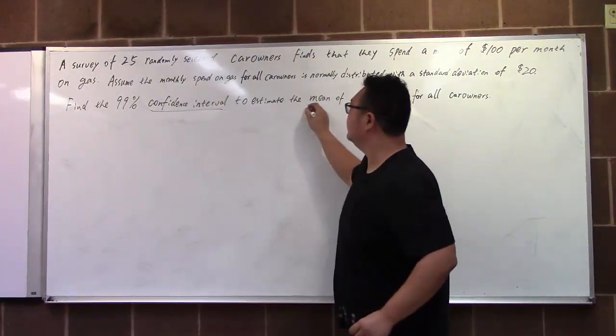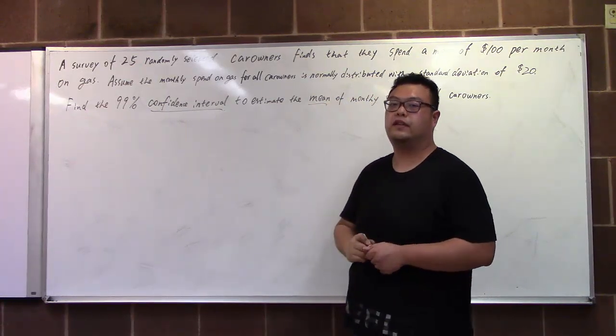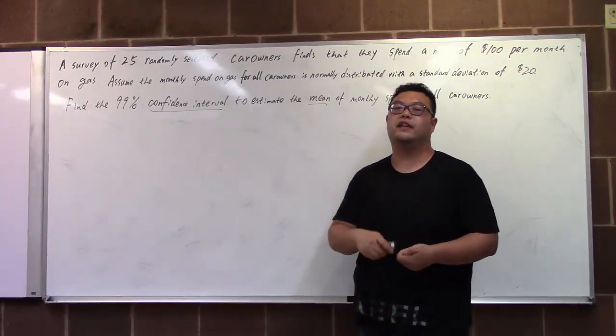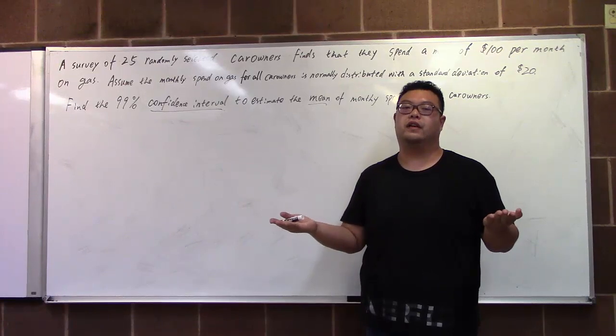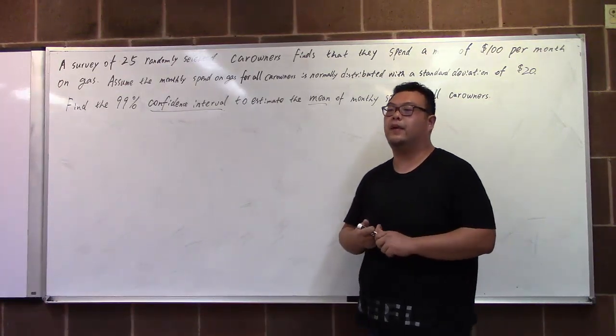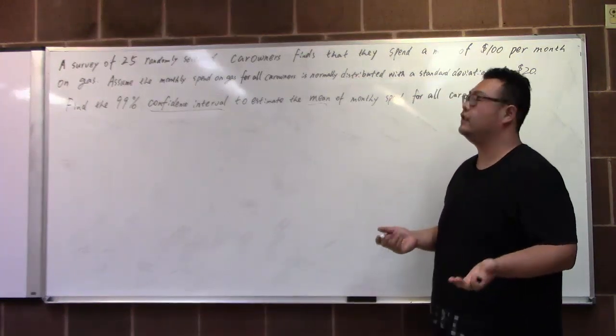For the confidence interval to estimate the population mean, the most important thing is which T or Z score we're using. It depends on the standard deviation part.